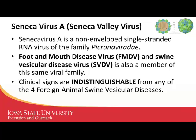Otherwise we run the risk of becoming complacent, and before we know it, it's going to be all over the country and much harder to eradicate. There are actually four different viruses — all considered swine vesicular disease viruses. They're all foreign animal diseases, not ones we currently have, so we want to make sure we're being vigilant and getting those reported.